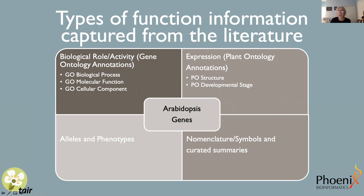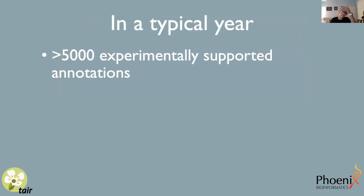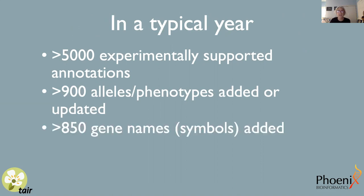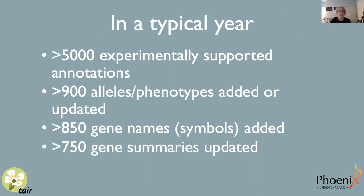We also capture information about gene expression — where and when genes are expressed — as well as information about genetic mutations and the effects of those mutations, which provides an understanding of normal gene function. We capture gene names and associate all the different gene symbols to their respective gene products, as well as crafting curated summaries of gene function. In a typical year, we add about 5,000 experimentally supported annotations, close to 1,000 alleles and phenotypes are added or updated, over 800 gene names and symbols are added, and we update upwards of 700 gene summaries.